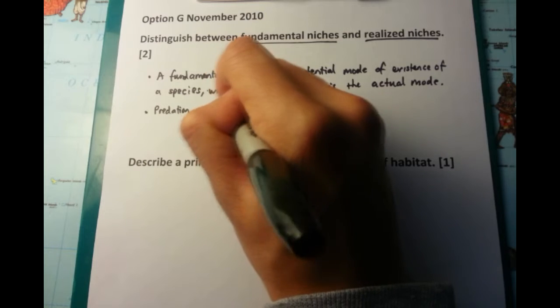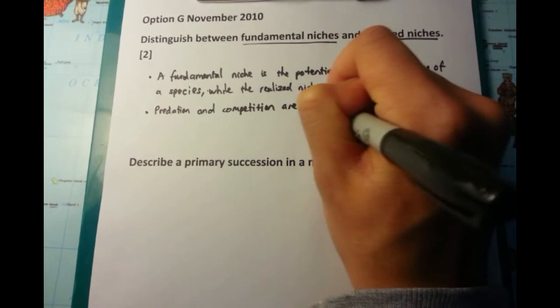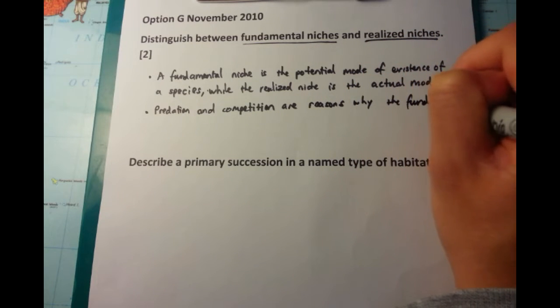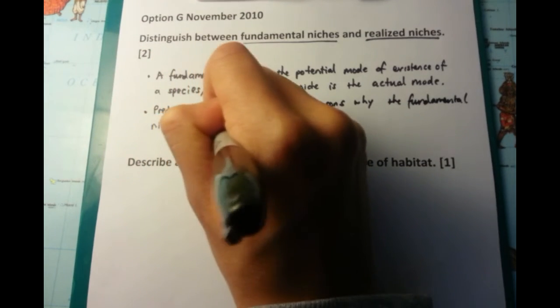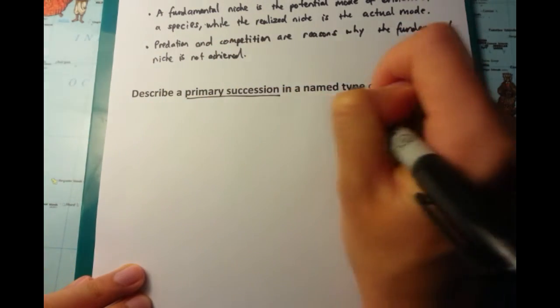Whereas another one might be occupied by some competition, a mole for example. That's what I'm writing down here, I'm giving examples of reasons why the fundamental niche is not achieved. I've talked about predation, I've talked about competition. There are two reasons why the fundamental niche is not achieved, and a realized niche is what actually happens.